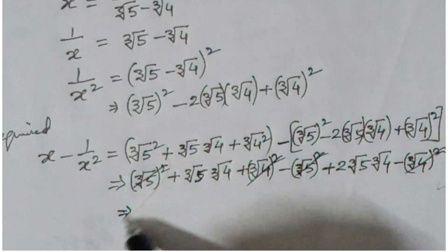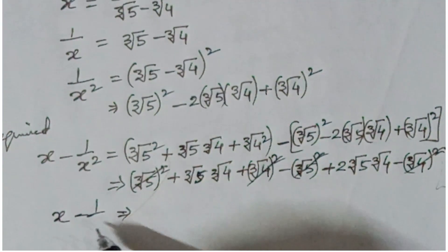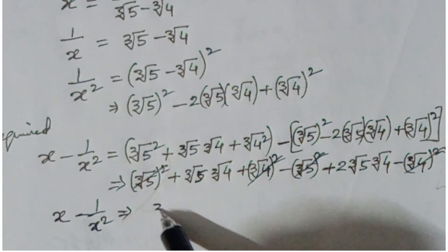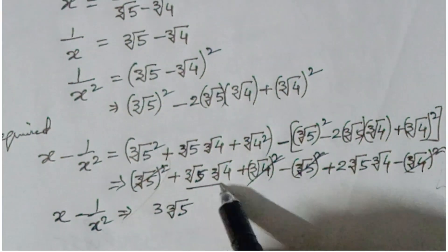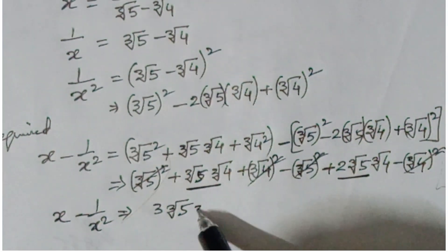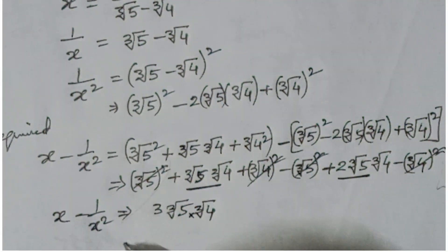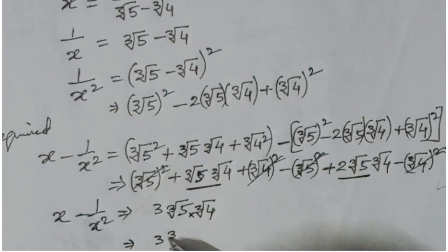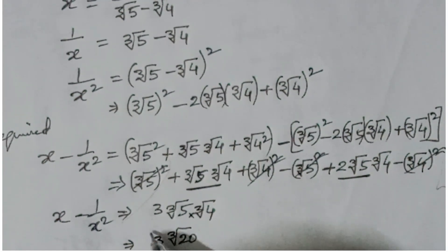So x minus 1 over x squared equals 3 times cube root of 5 times cube root of 4, which equals 3 times cube root of 20. That is the required answer: 3 cube root of 20.